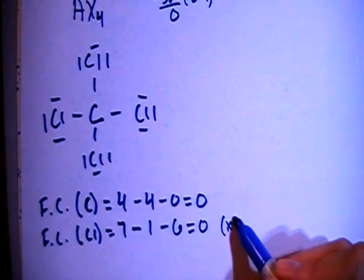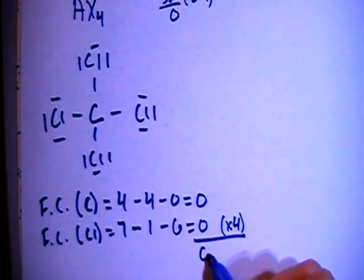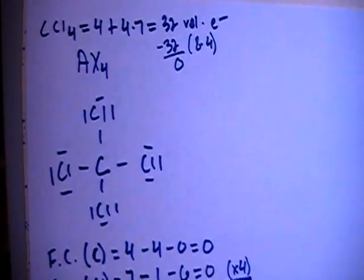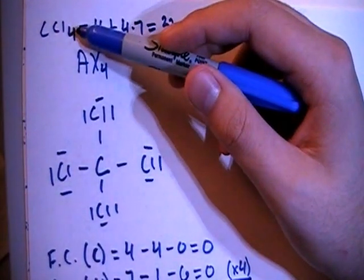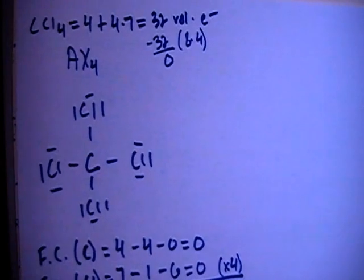Multiply that times four, because there's four of those chlorines, which gives you a total sum of zero for the overall formal charge, which is what we want, because this is not a charged particle, this is neutral. So that's supposed to be zero, that's good.